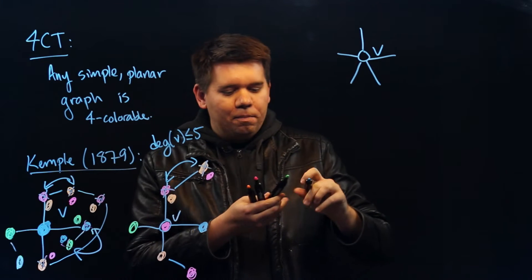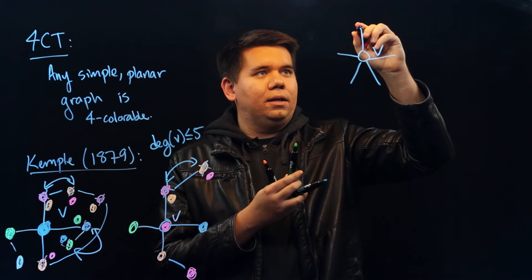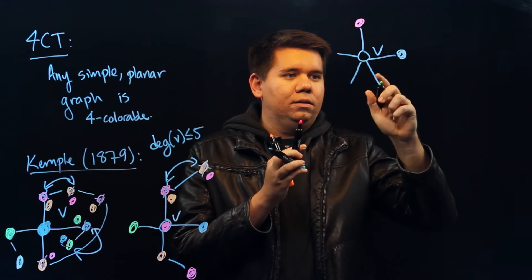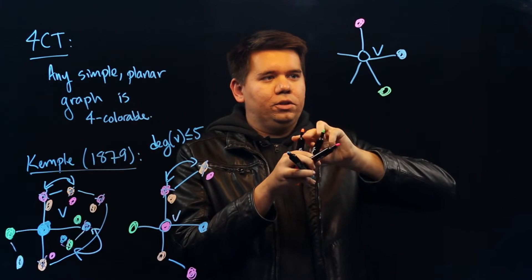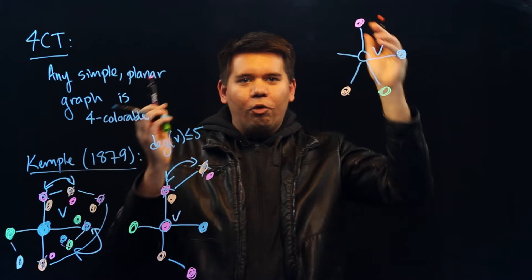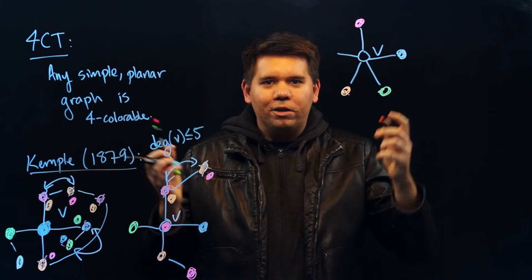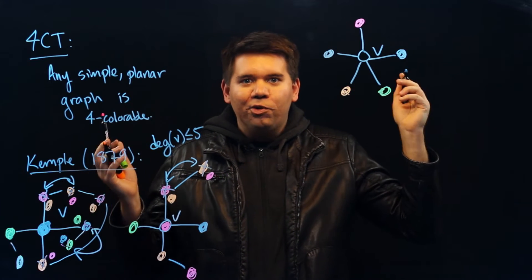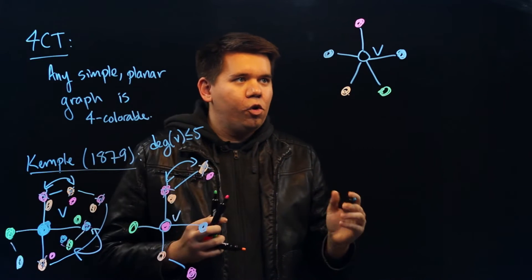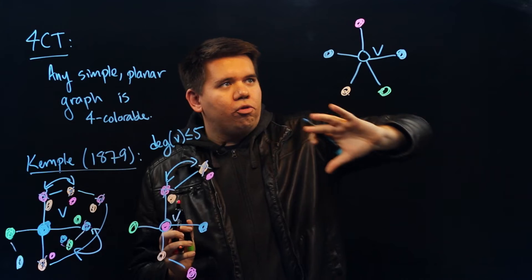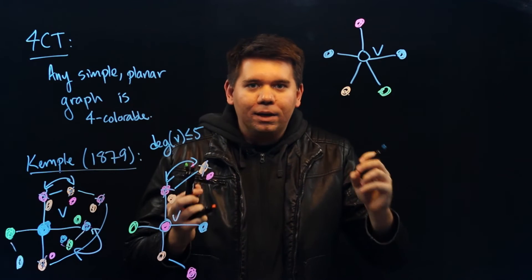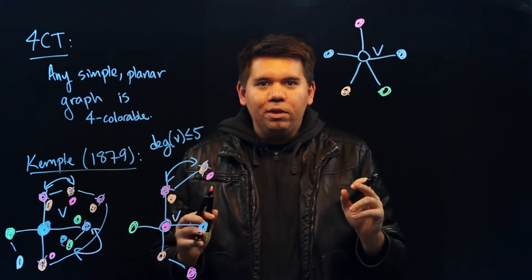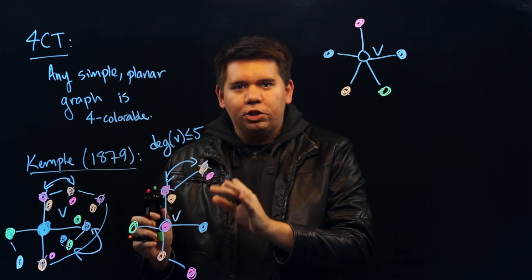For instance, you might have on top a pink, then a blue, then a green, then an orange. Now we've used up all 4, so this 5th one must be some other color again — let's assume without loss of generality it's blue again. Is there any way to recolor our map to free up a color that allows us to color V? To do this, we'll do a similar argument with chains.